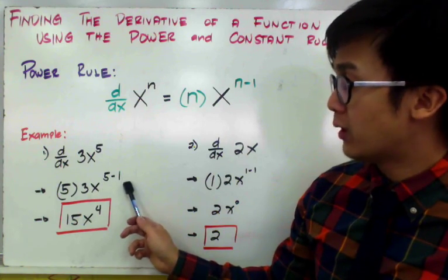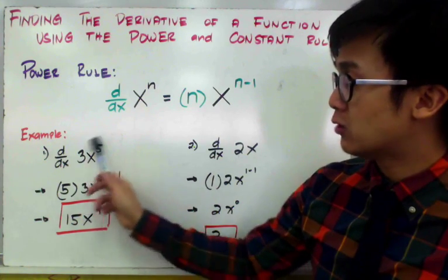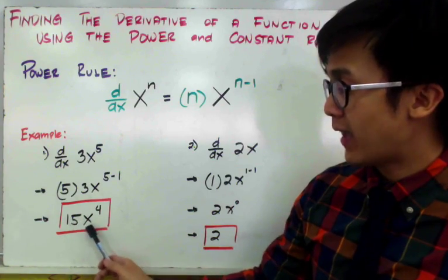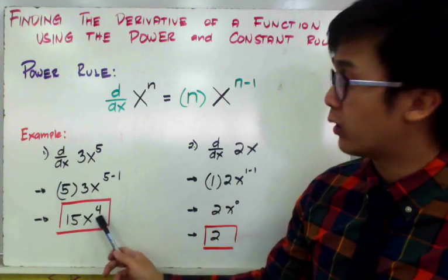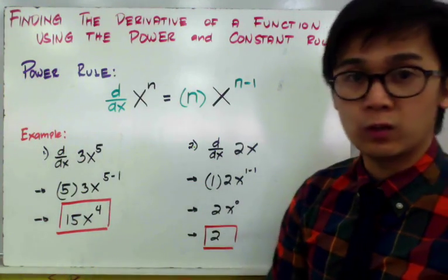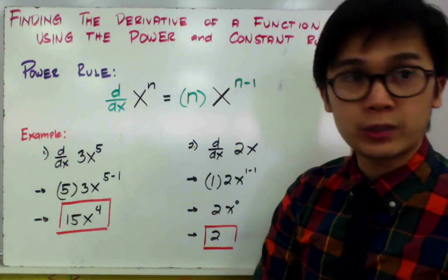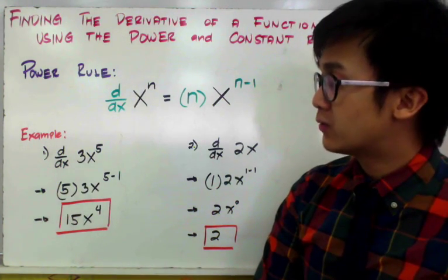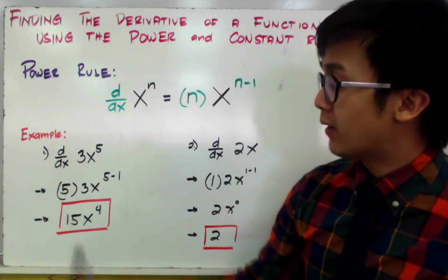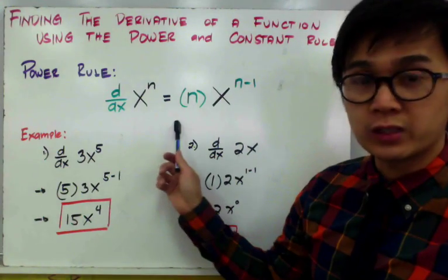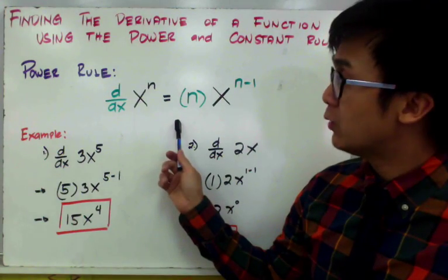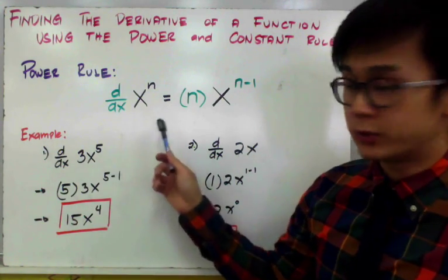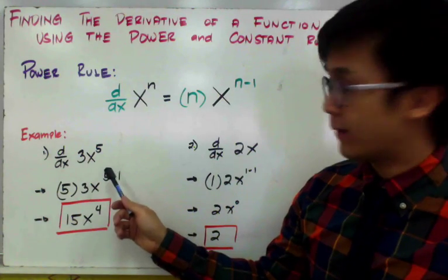Therefore, the derivative of 3x to the 5th is equal to 15x raised to 4 using the power rule. Notice that we don't need to use the definition of the derivative to find the derivative of a given function. This particular rule only applies for polynomials, similar to example number 1.